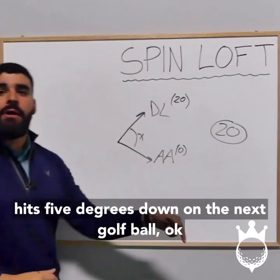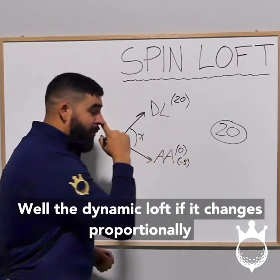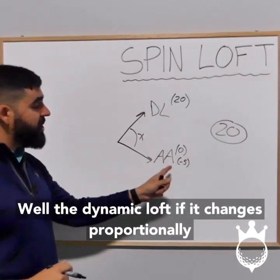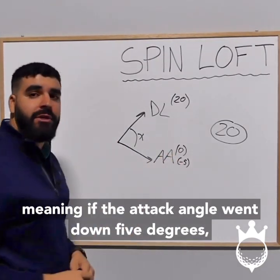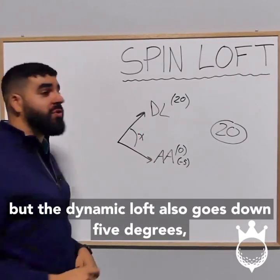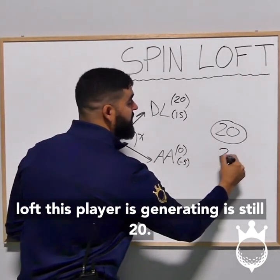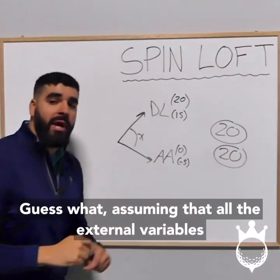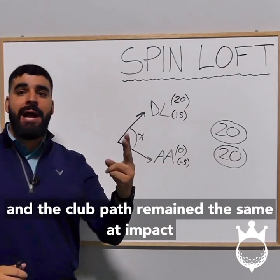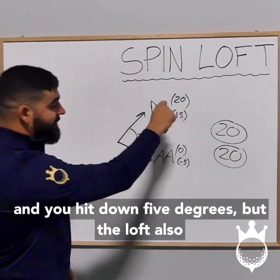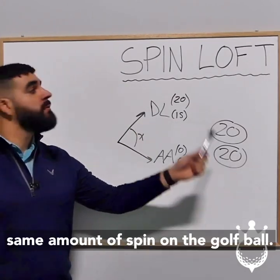If the golfer hits five degrees down on the next golf ball, so the attack angle is now minus five, but the dynamic loft changes proportionally with it — meaning the attack angle went down five degrees but the dynamic loft also goes down five degrees — now the loft at impact is 15. The spin loft this player is generating is still 20. Assuming all external variables remain the same, and the club face and club path remain the same at impact, if you hit down five degrees but the loft also lowered by five, you're generating the exact same amount of spin. The spin loft is staying exactly the same.